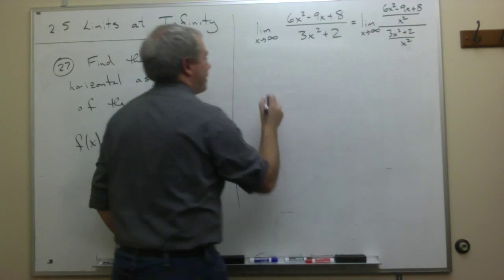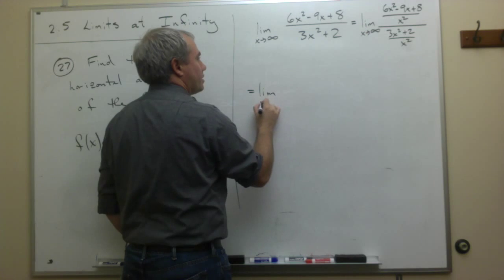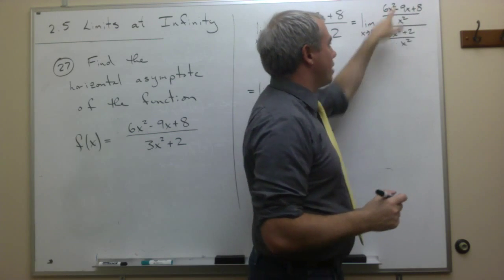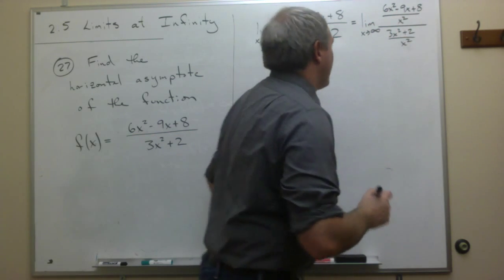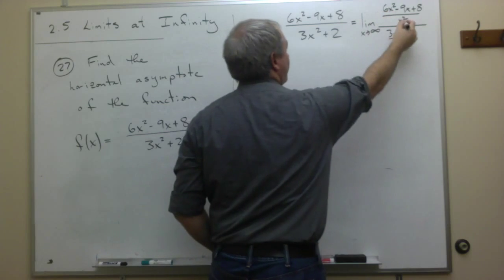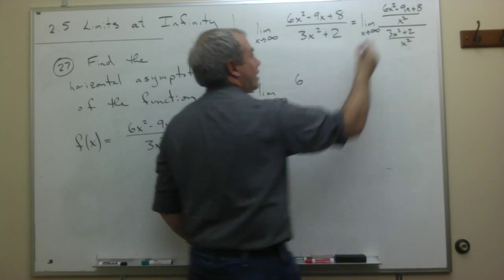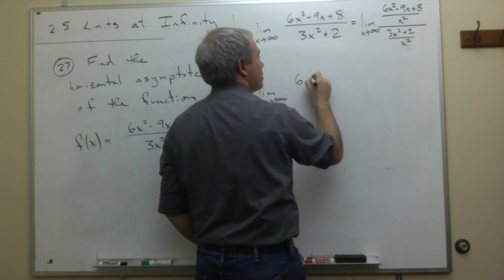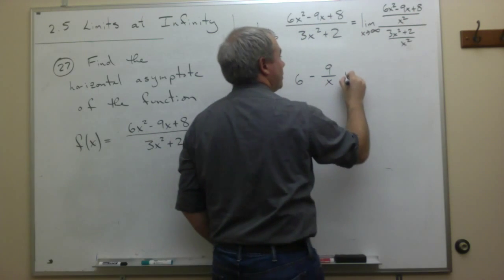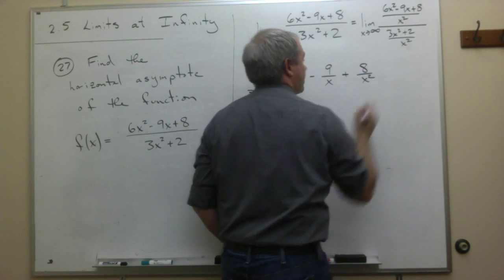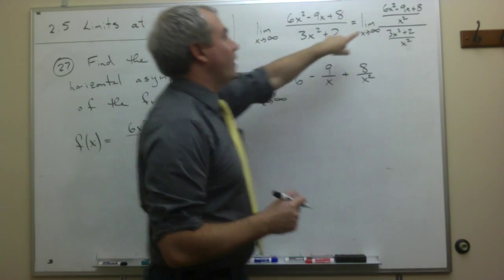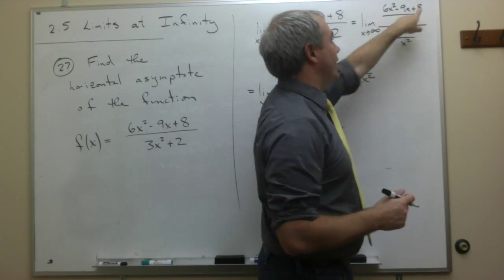Now let's simplify that just a little bit. I get the limit as x goes to infinity of, if I simplify this, I can break this into three fractions on top and on the bottom into two fractions. If I break up the top fraction into three pieces, I get 6x squared over x squared, which is just 6. I get minus 9x over x squared, which is minus 9 over x, and I get 8 over x squared. So you can see how the top of this fraction simplifies down to this, if I just divide everything by an x squared.